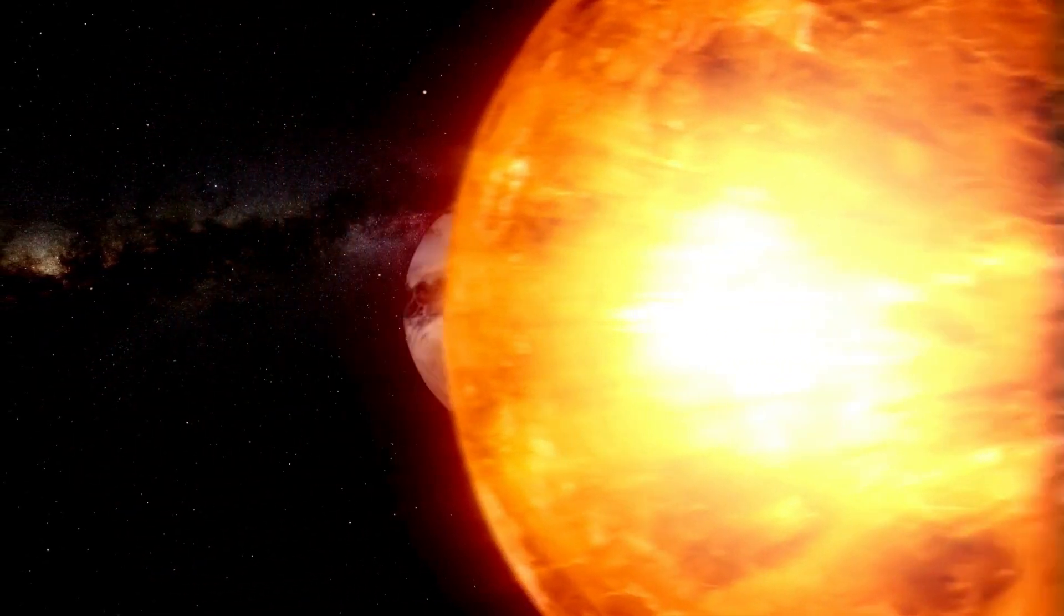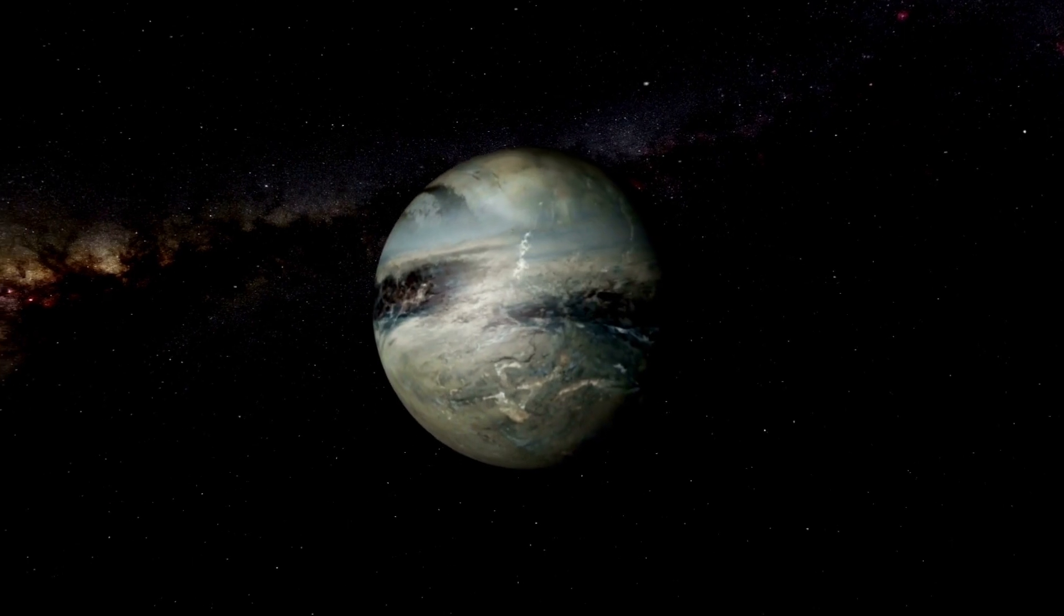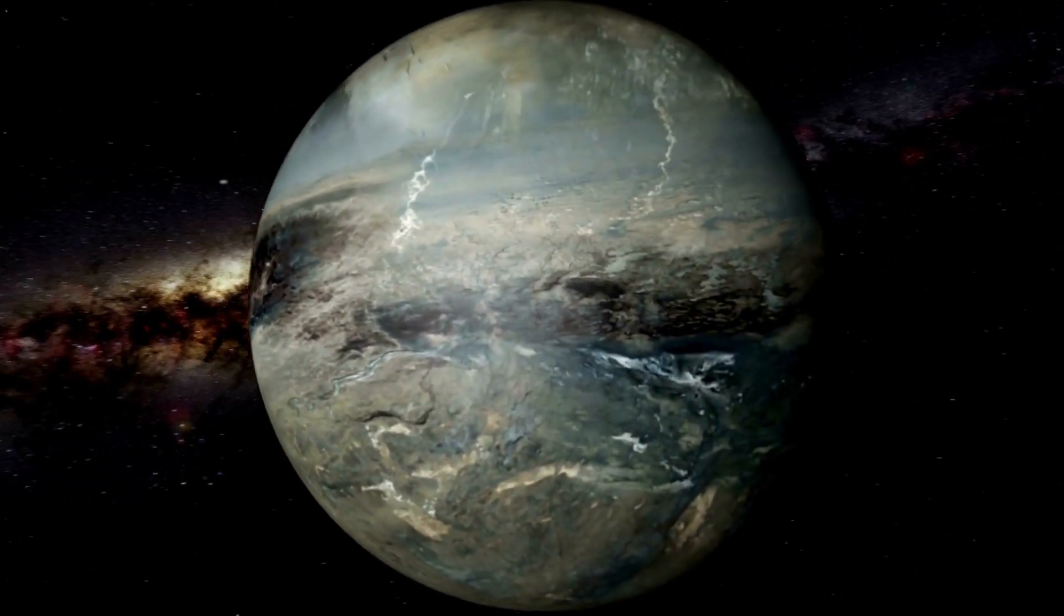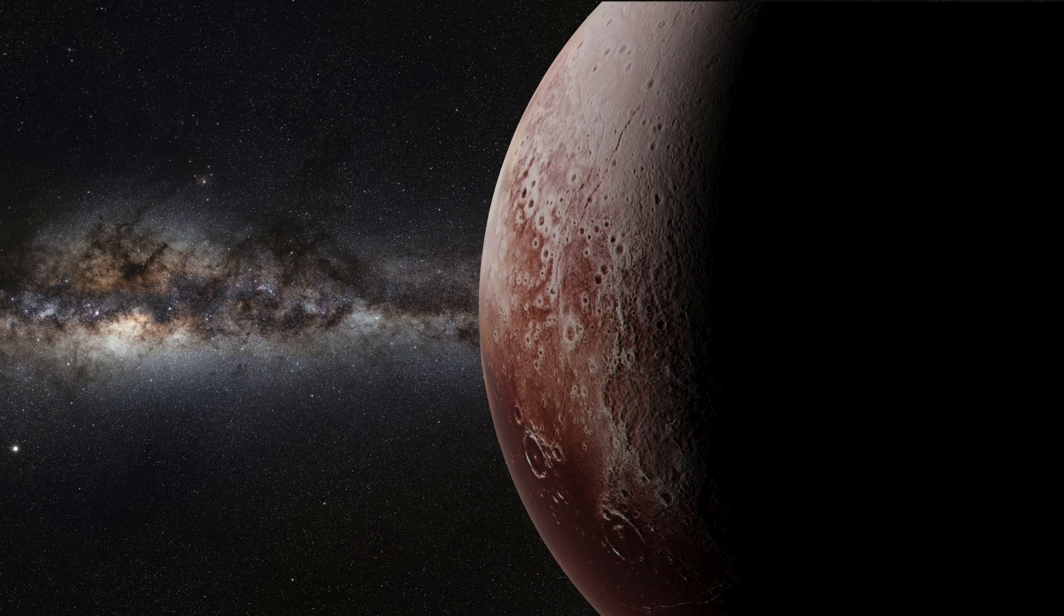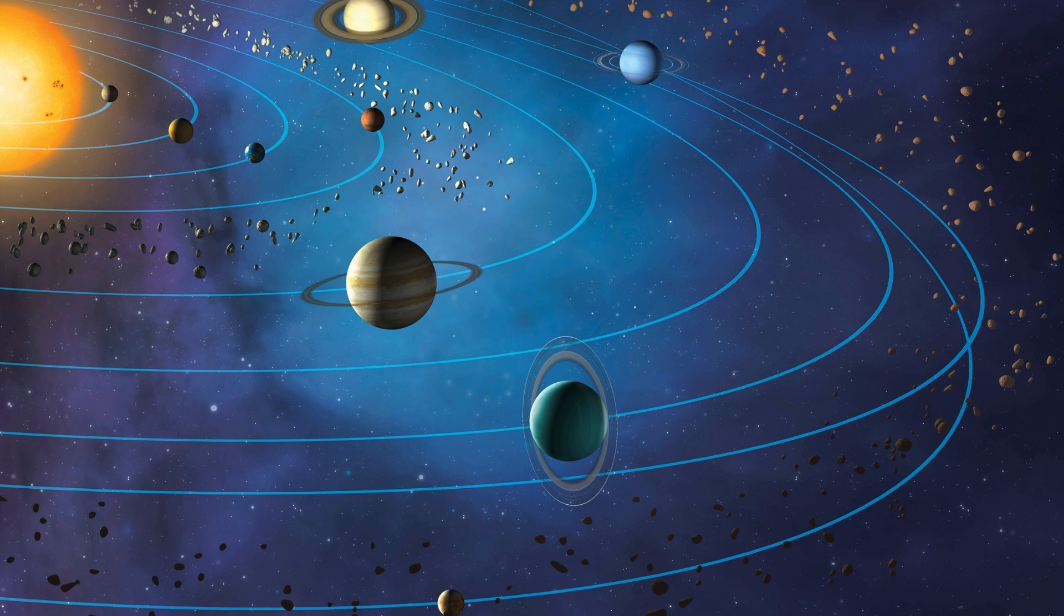If a collision were to occur, it would have significant consequences, potentially releasing immense amounts of energy and altering the orbits of other bodies in the solar system. For Neptune, such an event could impact its atmosphere and orbital path, while Pluto, being much smaller, could be severely damaged, with debris scattering across the solar system.